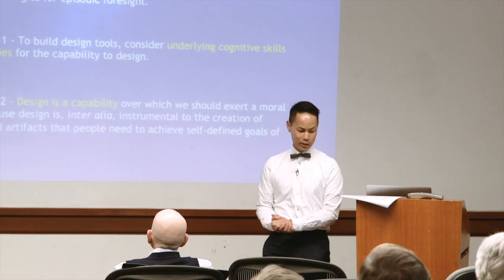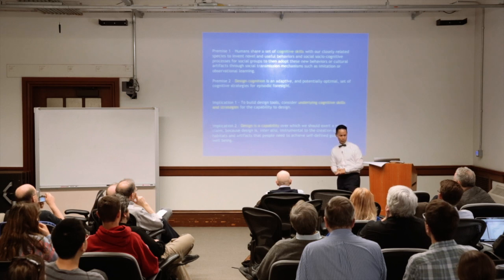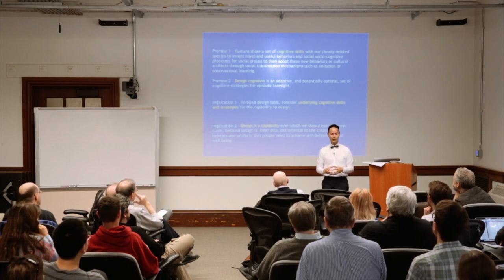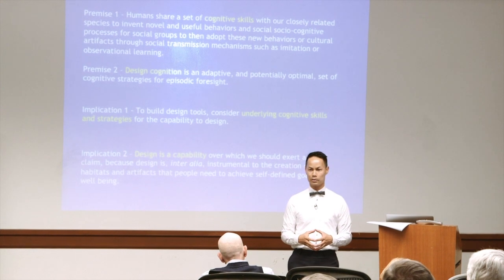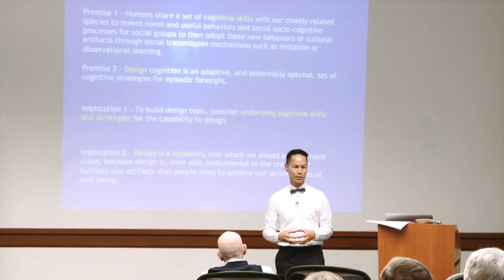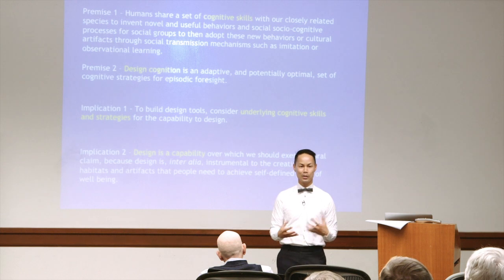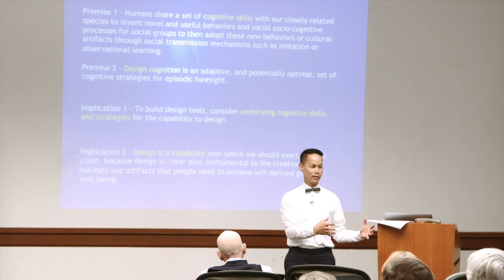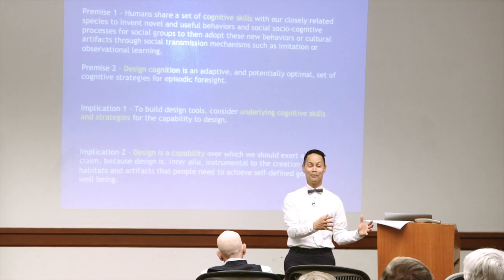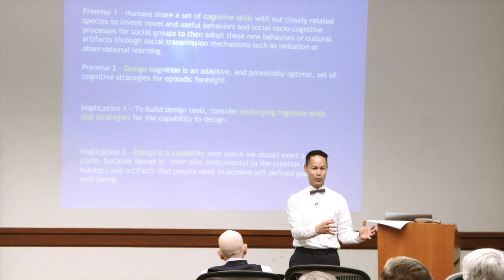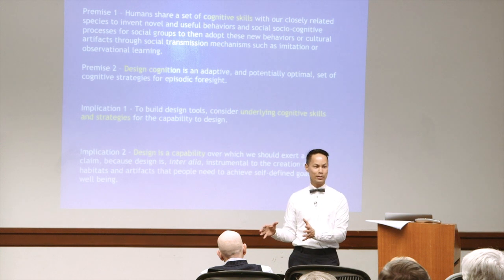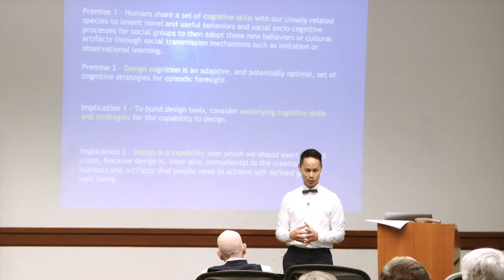I'm going to do this over roughly three premises. The first premise is that humans basically share a set of cognitive skills with our most closely related species, the great apes, which allow us to invent new worlds — and the socio-cognitive behaviors that allow us to transmit those inventions by imitation and learning, which is innovation. The capacity to design, to invent new worlds, is the design component. The socio-cognitive behaviors associated with adopting those innovations is the innovation component.